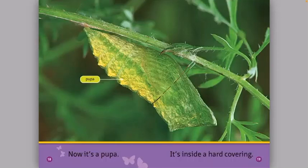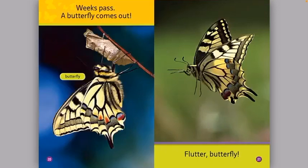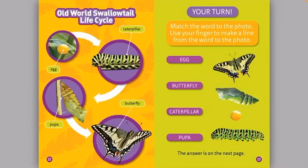Weeks pass. A butterfly comes out. Flutter butterfly. Old world swallowtail life cycle: it starts out as an egg, then it turns to a caterpillar, then it forms the pupa, and then it turns into a butterfly.